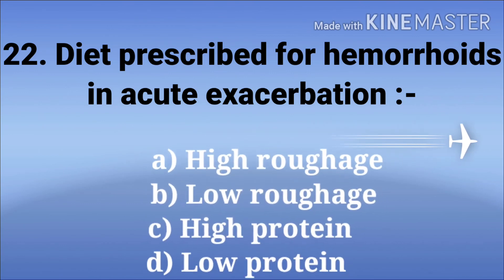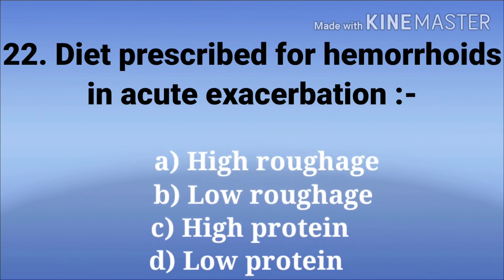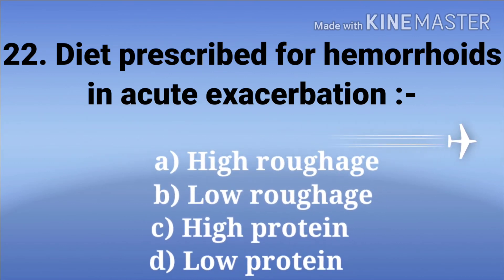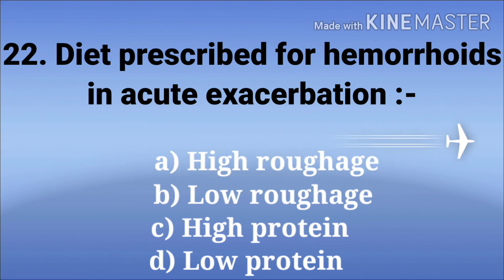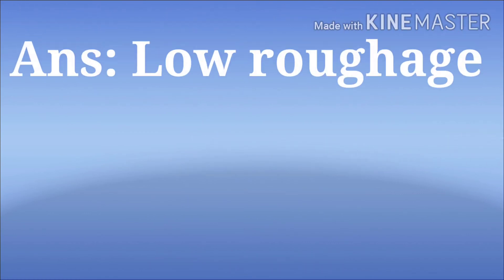Diet prescribed for hemorrhoids in acute exacerbation. The options are high roughage, low roughage, high protein, and low protein. The answer is low roughage diet.